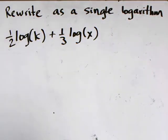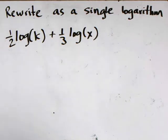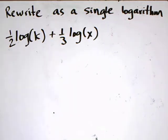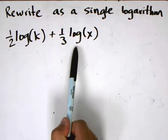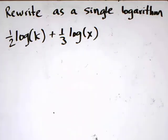I have a problem here: rewrite this statement as a single logarithm — one half log of k plus one third log of x. Notice that there are two logarithms here, log of k and log of x, and what I'm trying to do is combine them together into a statement that uses only one logarithm.